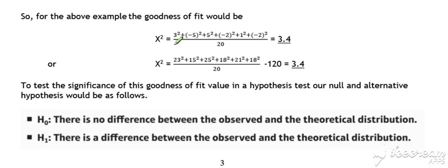So for the above example, using both methods for calculating the goodness of fit, we get a goodness of fit value of 3.4. If we're going to do a hypothesis test on that value, we would want to test the significance of this goodness of fit value.